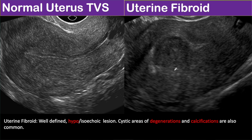Now look at this image. Here you can see a well-defined, slightly heterogeneous, predominantly hypoechoic lesion almost at the center of the uterine body. If you trace the endometrium superiorly, you can see the endometrium is actually located anterior to the mass. As the mass is located in near proximity to the endometrium, this is a case of submucosal fibroid.